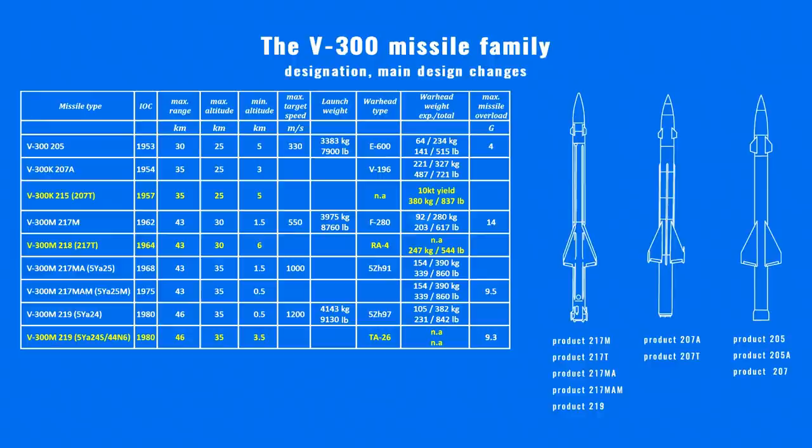Three of the missile types — 207T, 217T, and one version of the 219 — were equipped with nuclear warheads. The Type 207 featured a nuclear warhead weighing 380 kg, with a destructive yield of 10 kilotons.